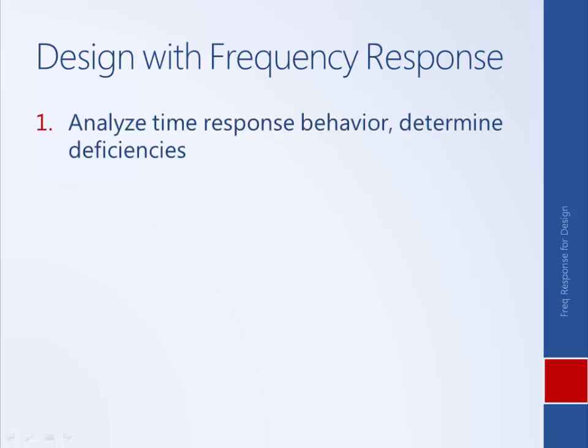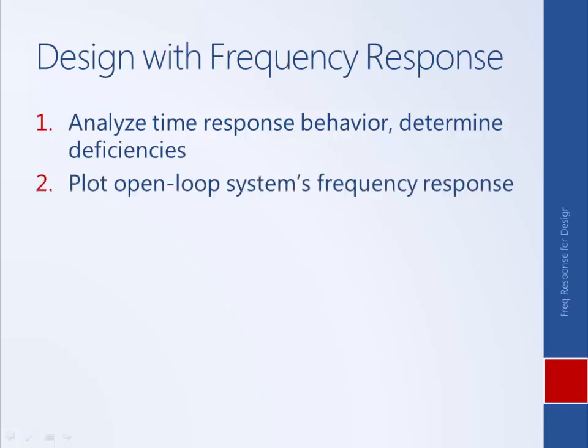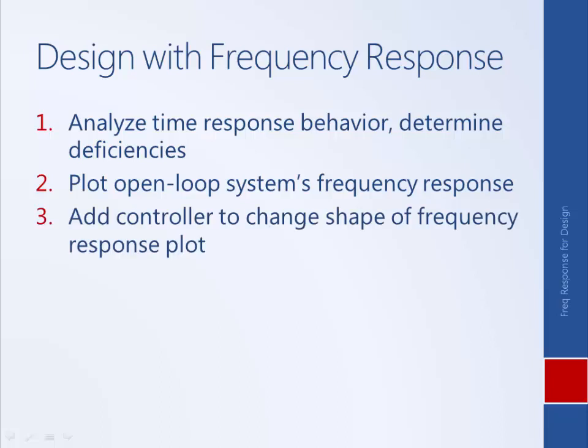First, we'll analyze the time response behavior of a system to determine its deficiencies. Since ultimately what we care about is how the system behaves in the time domain, that's what we will use to determine if the system is too slow, does it overshoot too much, etc. We will then plot the system's open loop frequency response, and add a controller to change the shape of the frequency response plot to cause a corresponding change in the system's time response behavior — make it faster, make it overshoot less.